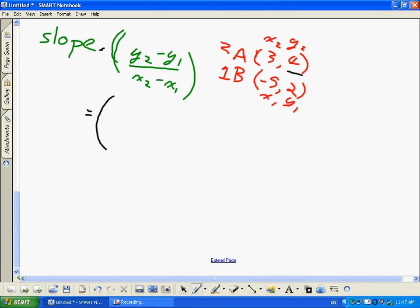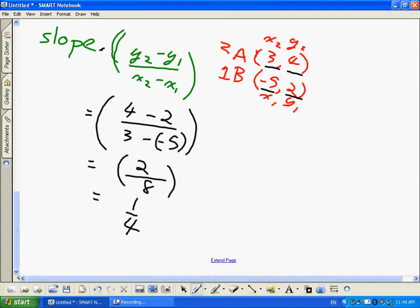Everything will still work. So Y2 is 4, subtract Y1 is 2. X2 is 3, subtract X1 is negative 5. We equate this, we'll get 2 over, that's 3 plus 5, so 2 over 8. Our slope is 1 over 4. We reduce the fraction. So the slope of line AB is 1 over 4. That's great. I have a slope now.